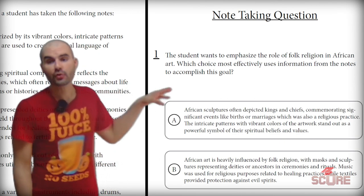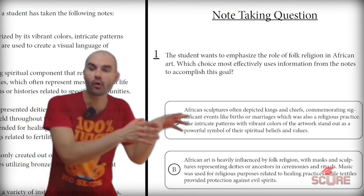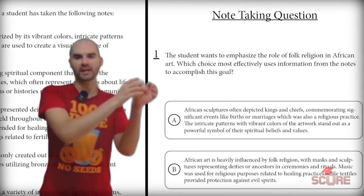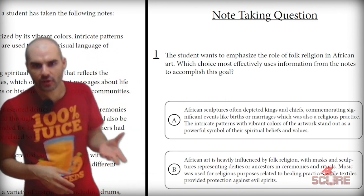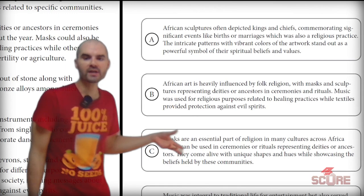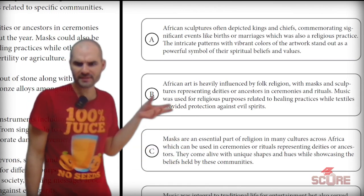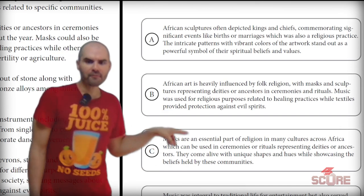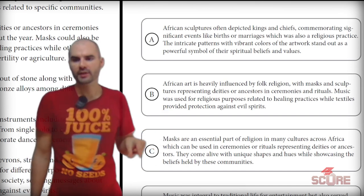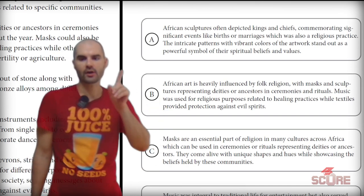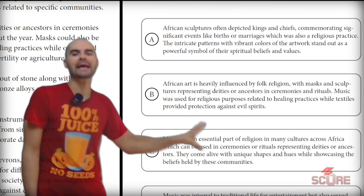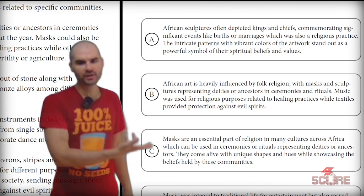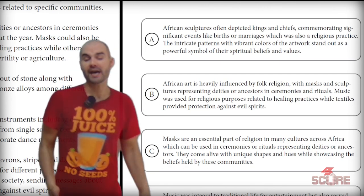Same strategy — we're going to look at the question. It says the role of folk religion in African art, so I want to focus on folk religion in African art. Looking at the answer choices, the first one talks about sculptures and various things they do — that's definitely wrong because it's not focusing on religion. The second one says African art is heavily influenced by folk religion, with masks and sculptures representing deities. This seems like the right answer because it's connecting the two topics we're looking for from the question.